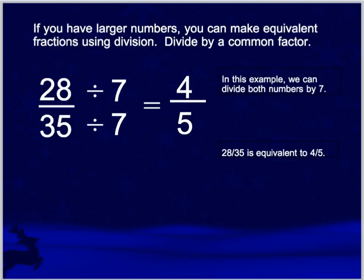If you have larger numbers, you can make equivalent fractions by using division — divide by a common factor. In this example, we can divide both numbers by seven. So twenty-eight thirty-fifths is equivalent to four-fifths.